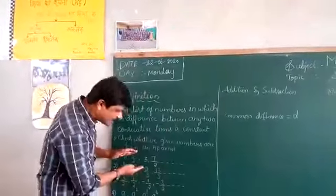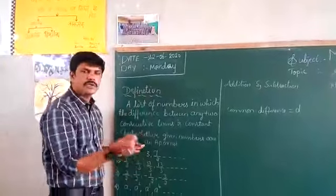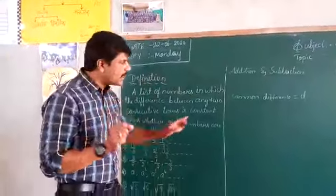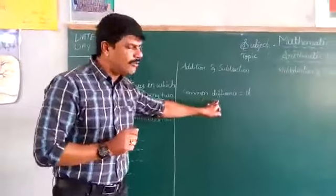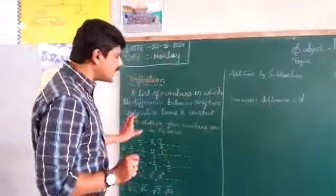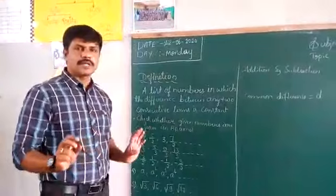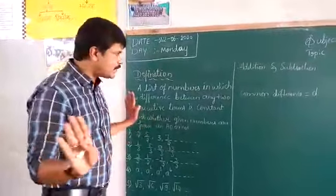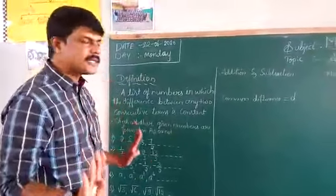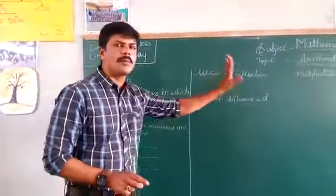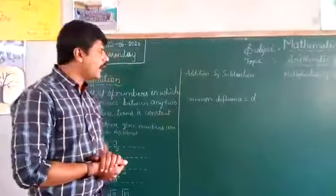Just by seeing the set of numbers, we should know whether they have a common difference. If they do, then it is Arithmetic Progression. That's all. Arithmetic Progression means the numbers should have a common difference.